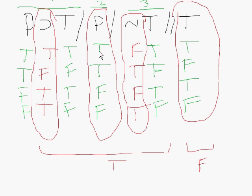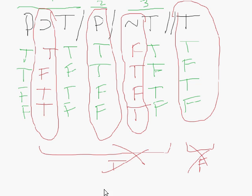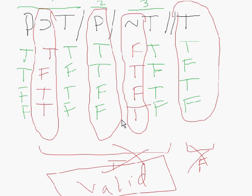Now I'm looking for a case in which all the premises are true but the conclusion is false. Testing each row: row 1 has true, true, false — the conclusion is false but not all premises are true. Row 2 has false, true, true — doesn't work. Row 3 has true, false, false — no. Row 4 has true, false, true — nope. I cannot find a case in which all of the premises are true and the conclusion is false, so I will argue this argument is valid. If it's not invalid, it has to be valid.